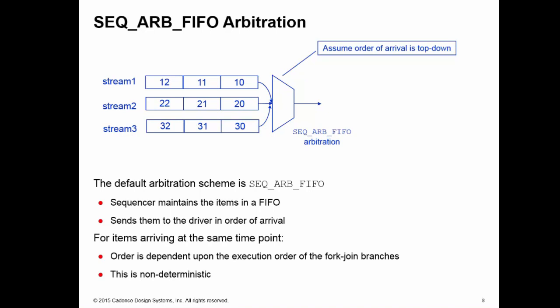For items which arrive at the same time point, their order of arrival at the sequencer is dependent upon their execution order when they are generated. For example, if they're generated from multiple fork join blocks, it depends on the execution order of those branches in the fork join. This is non-deterministic by the rules of Verilog, but is predictable between different simulation runs. Assuming these data items arrived top down, so 10 arrived first, then 20 and 30, the simple FIFO arbitration mechanism just deals with these items in the order in which they appear. Every time we take a data item from a stream, it queues up the next item, but that is not dealt with until the other items which are waiting in the queue have been sent down.